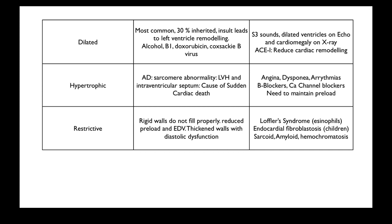Treatment for restrictive cardiomyopathy involves treating the underlying cause and continuing with cardiac prophylactic medications such as beta blockers and calcium channel blockers, while trying to increase the amount of oxygen received by the heart.